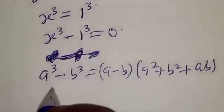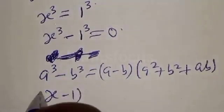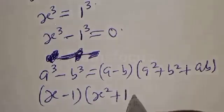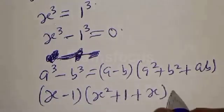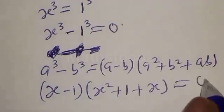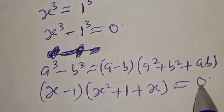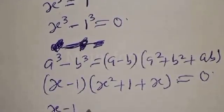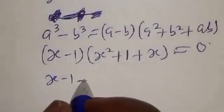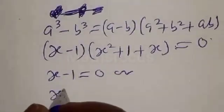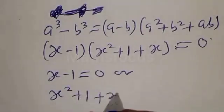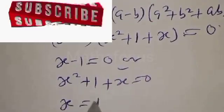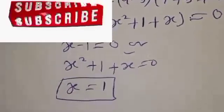Let's substitute into the equation. We have X minus 1 multiplied by X squared plus 1 plus X, equal to 0. Therefore, X minus 1 equals 0, giving X equal to 1, or X squared plus X plus 1 equals 0. From here, X equals 1 is one of the solutions.